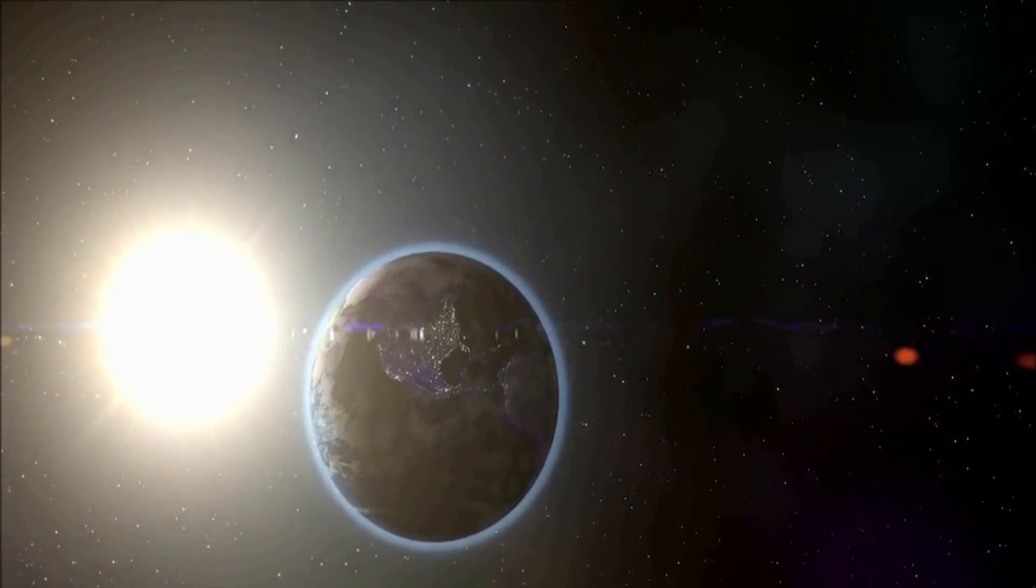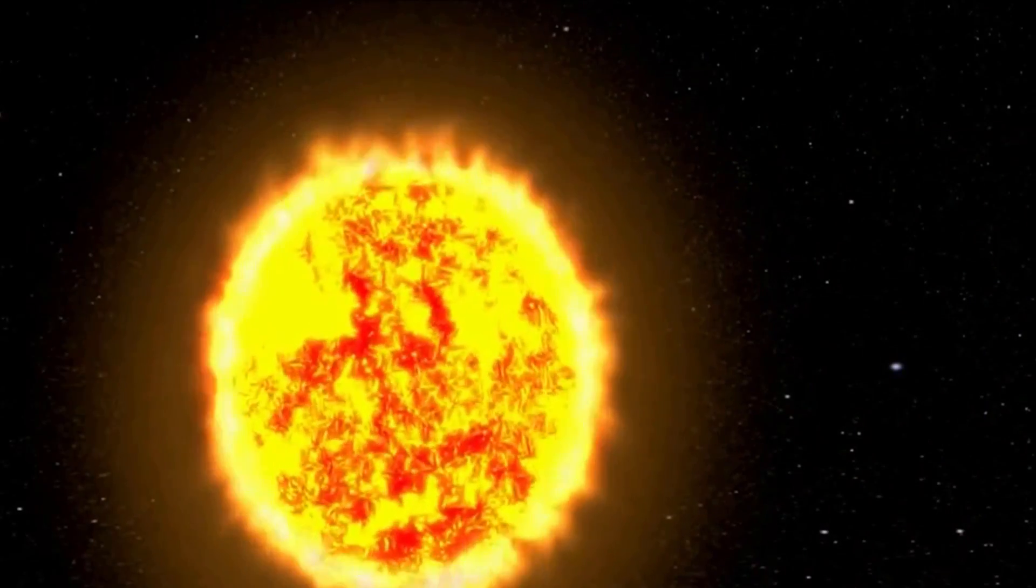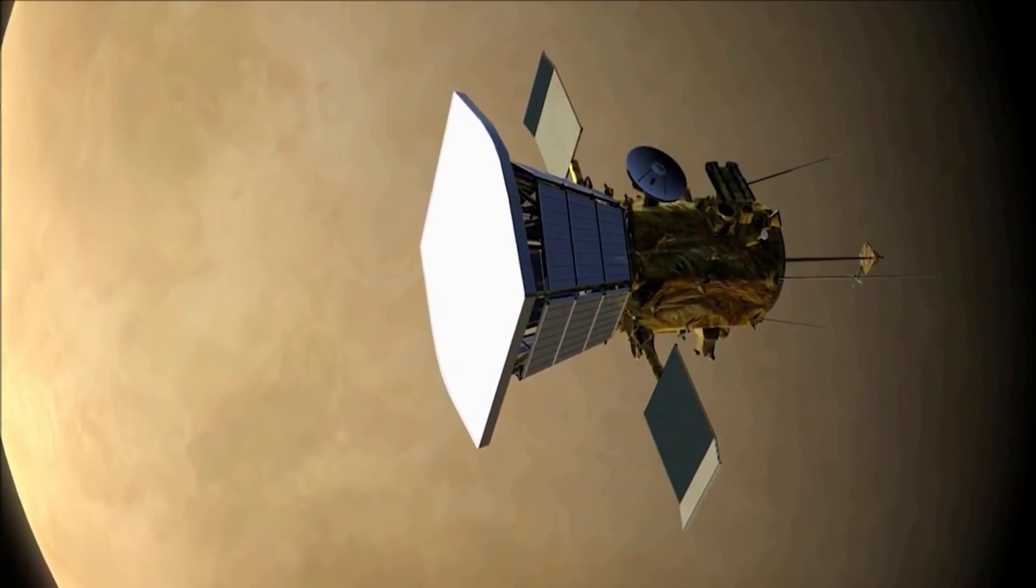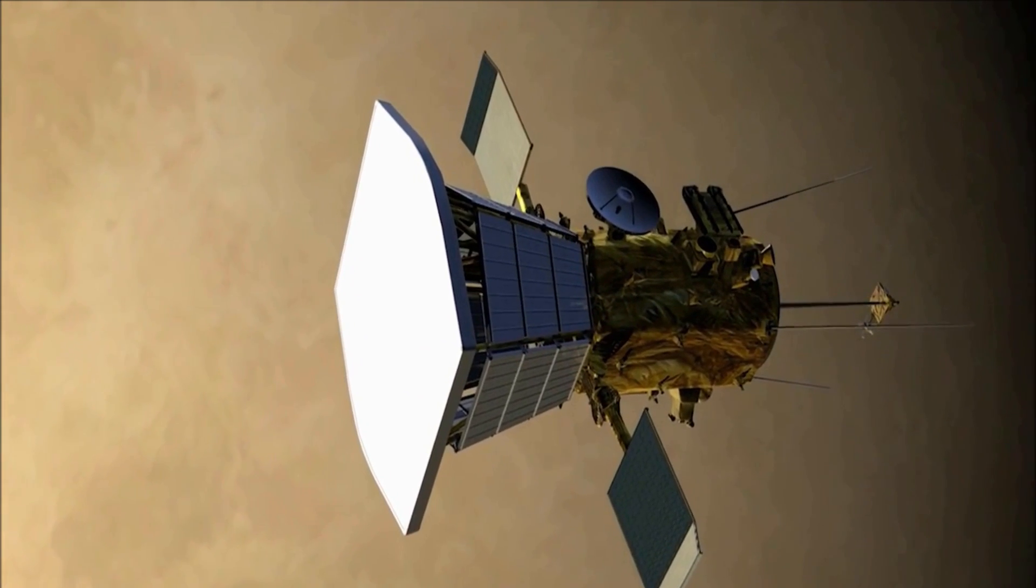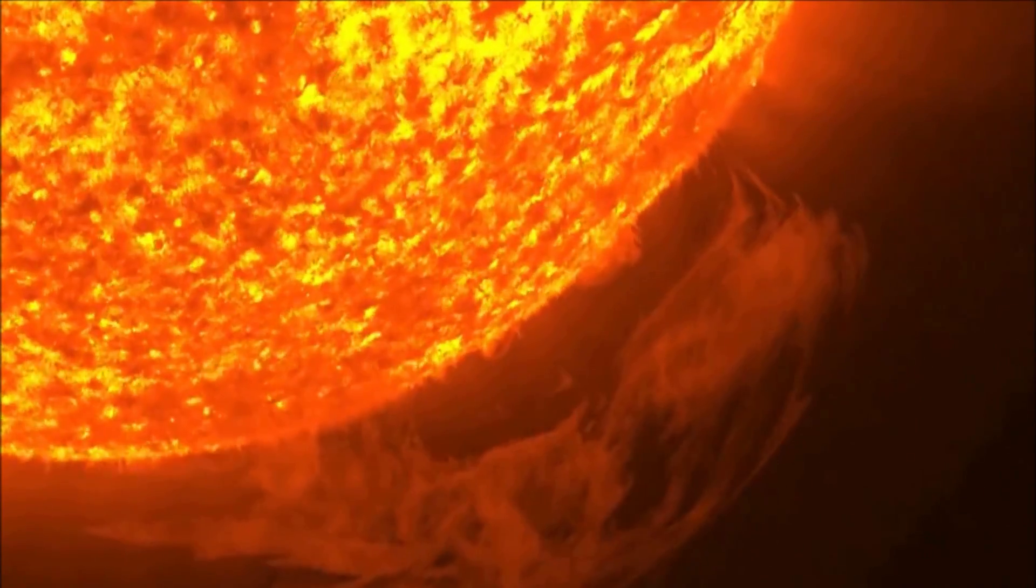NASA's new mission is slated to launch in the summer of 2018. The probe will fly past Venus seven times over the course of almost seven years as it gradually settles into its orbit around the Sun.